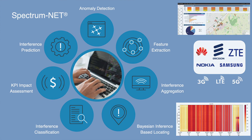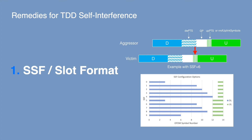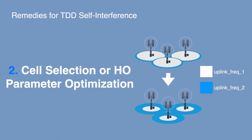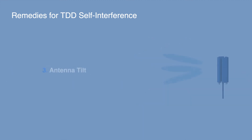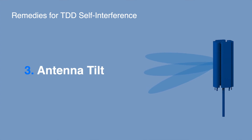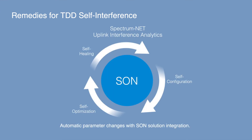We will now review the actions available to operators to address TDD self-interference. First, for aggressor cells, the special subframe configuration in LTE or slot format in 5G NR can be changed to increase the guard period — a 10 OFDM symbol guard period provides around 200 kilometers of protection. Second, cell selection or handover configuration parameters can be adjusted dynamically so that footprints of victim and aggressor cells are reduced during the ducting period. Third, the antenna tilt can be lowered at aggressor cells to reduce TDD self-interference. SpectrumNet integrates with operator SON or configuration management tools to automate these parameter changes.